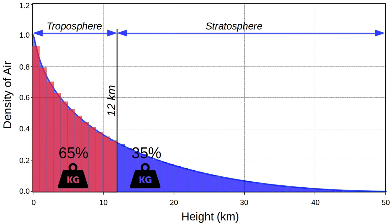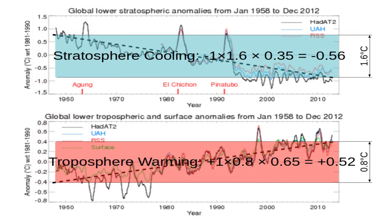The stratosphere is much thinner, and because it is much thinner than the troposphere, it weighs only 35% of the whole atmosphere. But because the stratosphere is cooling much more — 1.6 degrees — this total results in minus 0.56 degrees temperature drop over the last 50 years. And then the troposphere warming: that's plus 1, because it is positive coupling, so the temperatures go up. Times 0.8 — this is the temperature rise over the last 50 years.